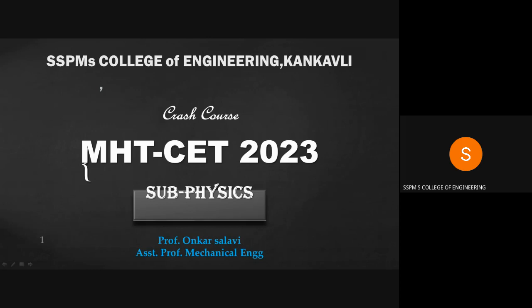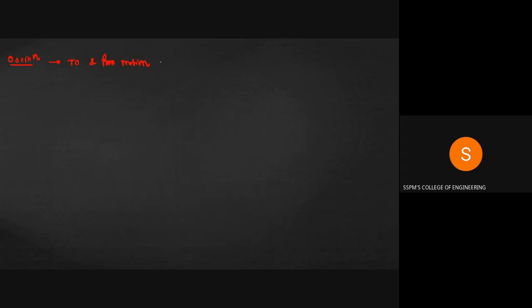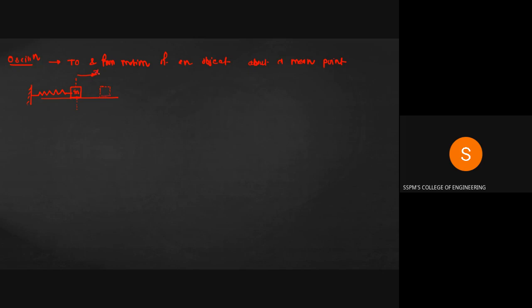So what is basically oscillation? Oscillation is nothing but the to and fro motion of any object about a mean position. We can take the simple example of a spring-mass system. When a spring is connected to mass m, initially mass m is at rest. If you displace the mass from the mean position to the extreme position by displacement x, this mass will oscillate between the two extreme positions.